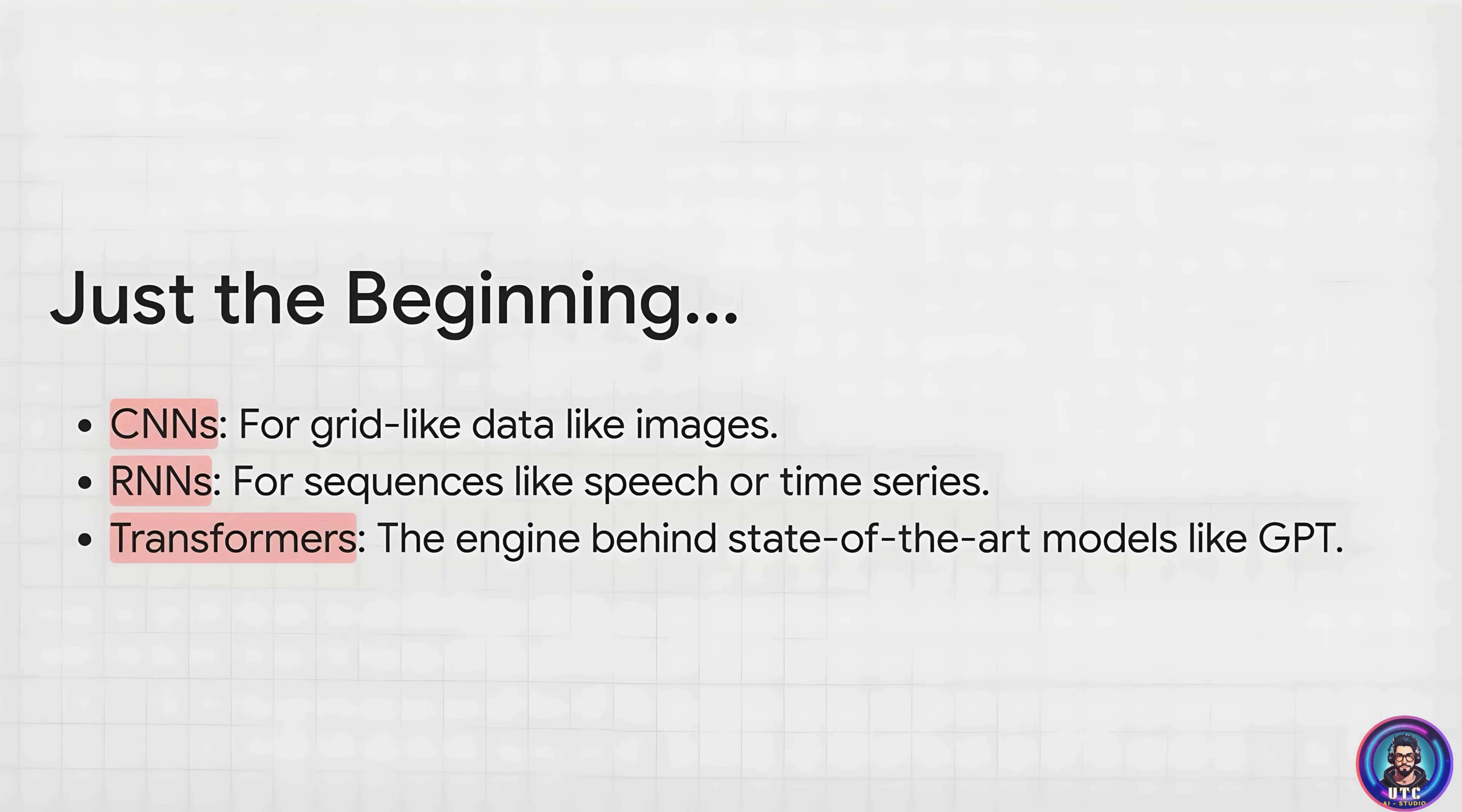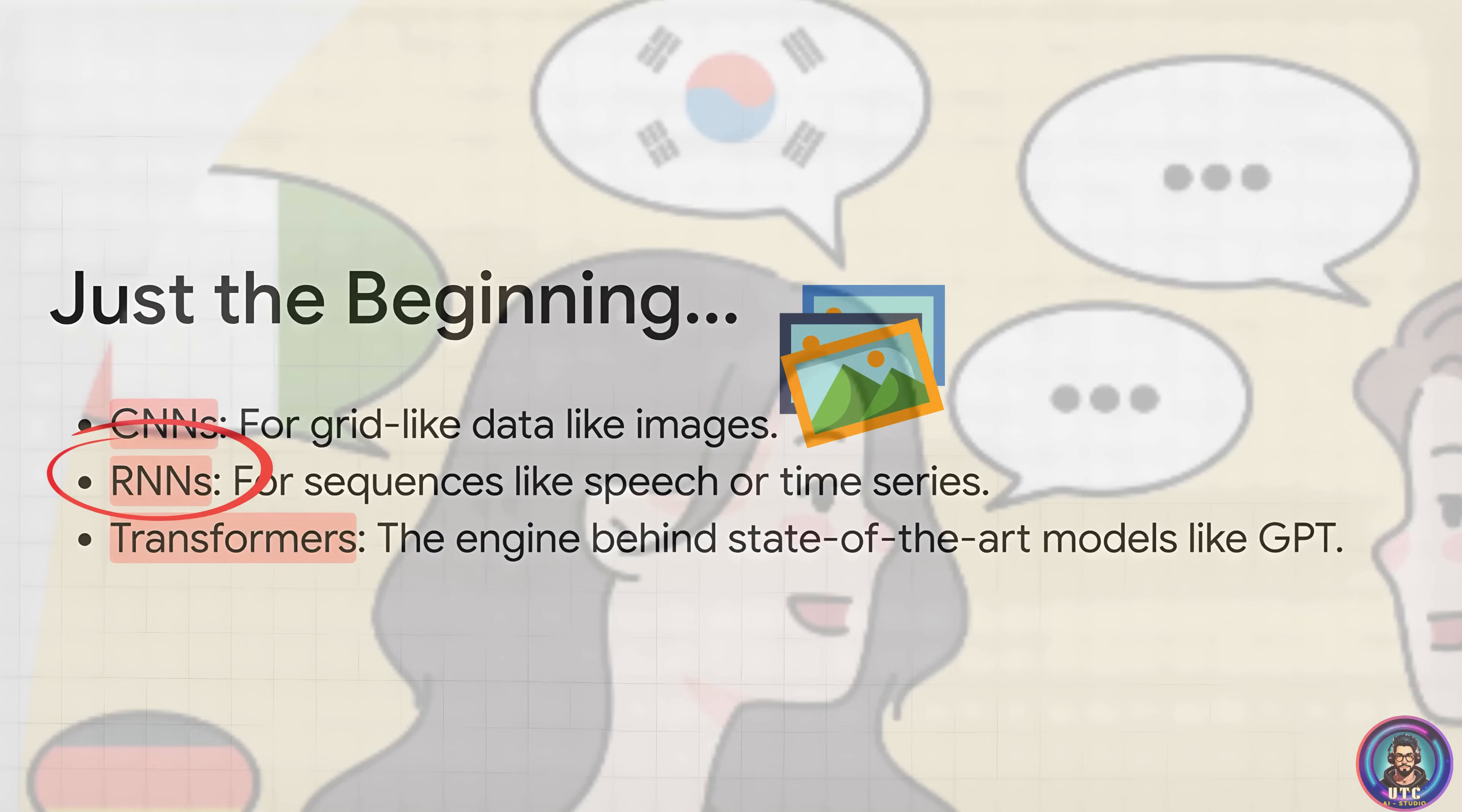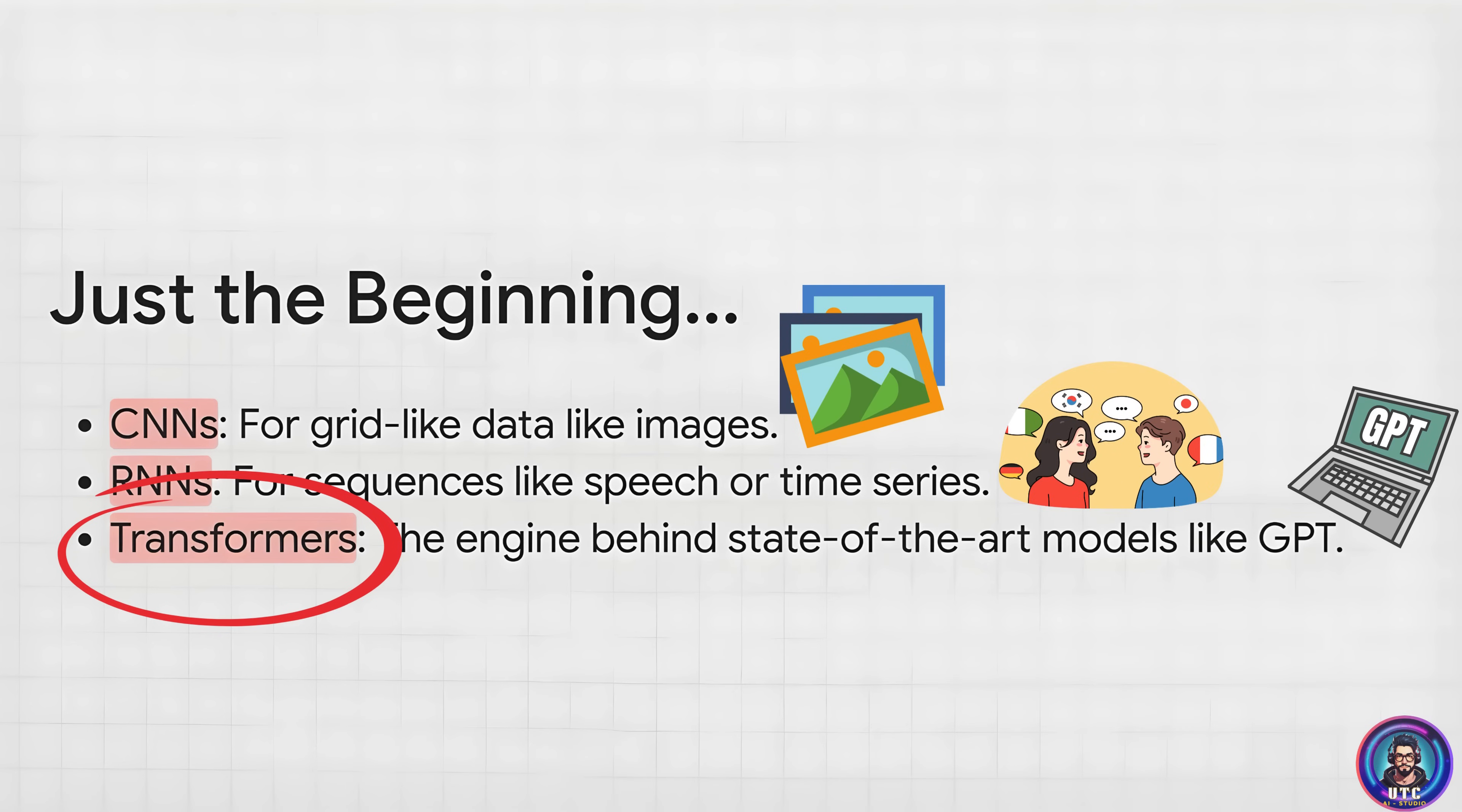Now, it's really important to remember that what we've just described here, it's kind of like the Model T of neural networks. It's the classic, the original, but it's just the beginning. This basic idea is the foundation for all kinds of specialized, way more powerful networks. You've got things called convolutional neural networks, which are absolute wizards when it comes to images. There are recurrent neural networks that are built to handle sequences like language or speech. And then you have transformers, which are the incredible engines behind those huge models like GPT that are changing everything.